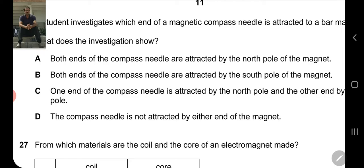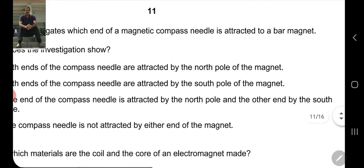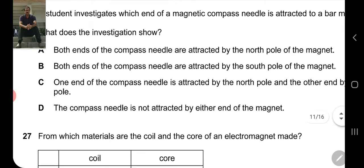Option C: One end of the compass needle is attracted by the north pole and the other end by the south pole. This is absolutely correct. One end will attract to the north pole, the other to the south pole. Option D: The compass needle is not attracted by either end - this is not possible. So option C is correct. The compass needle has two ends - north and south. The compass needle's south attracts to the bar magnet's north, and the compass needle's north attracts to the bar magnet's south.